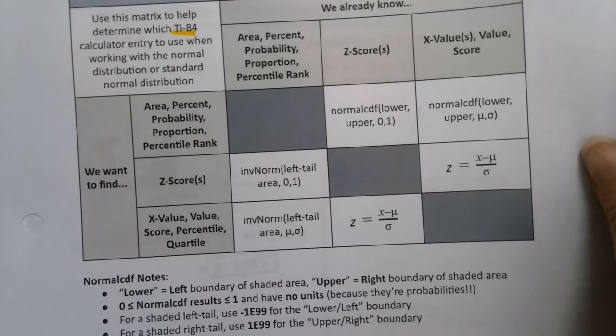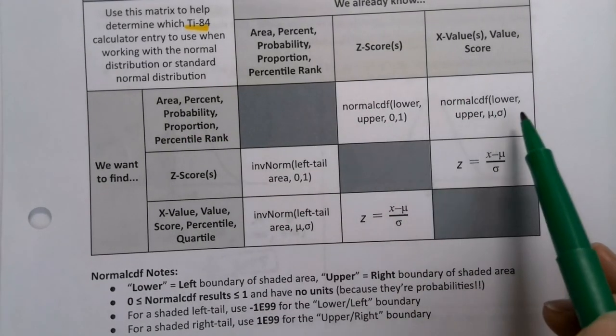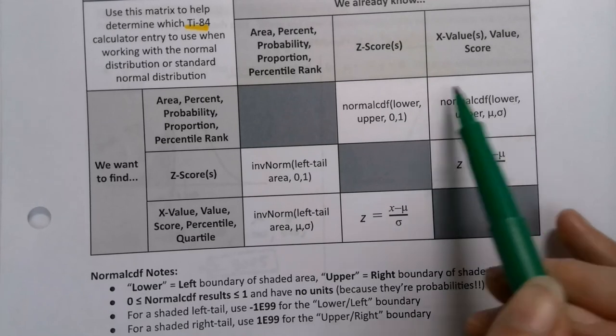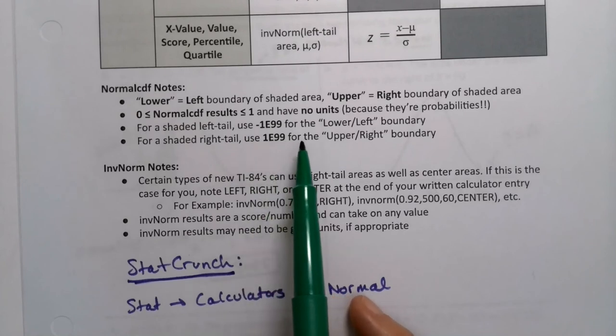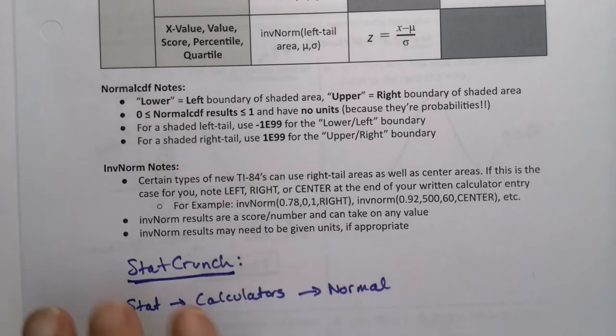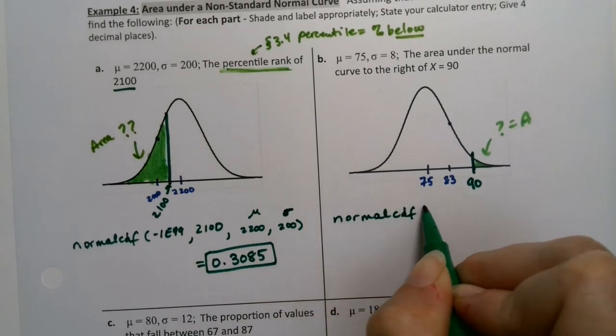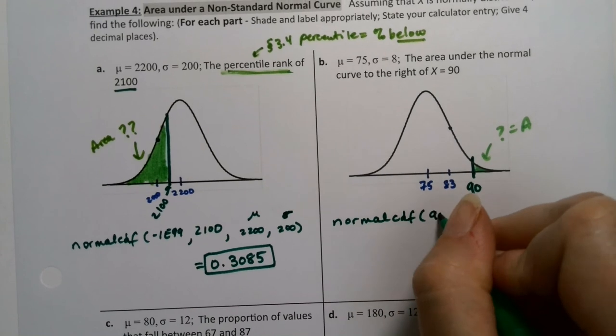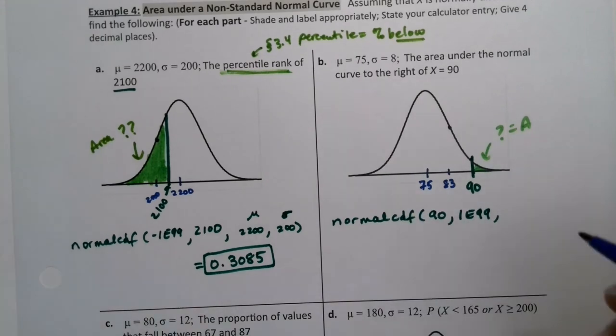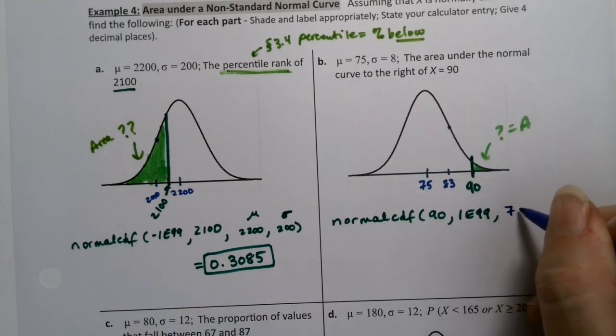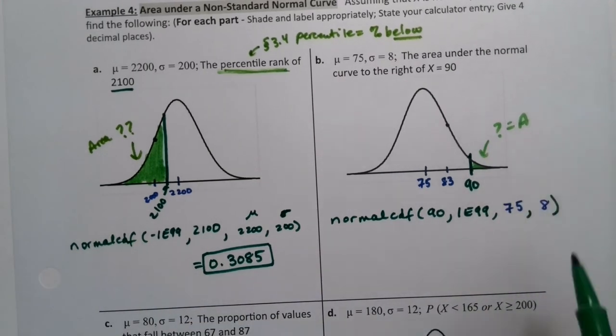I know an X value. I am looking for an area. So I'll use normal CDF, lower, upper, zero, or it's mean mu and sigma. And you'll notice because I'm shading to the right, I'll be using 1E99 for that upper boundary. This decision matrix really helps if you're using the calculator. If you're using StatCrunch, I don't know if you even need it because I think it's easier in StatCrunch. You don't have to worry about the 1E99 business for starters. The standard deviation and the mean. So it goes mean and then standard deviation. The mean was 75. The standard deviation was 8.